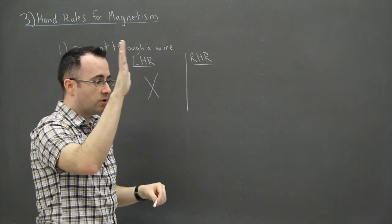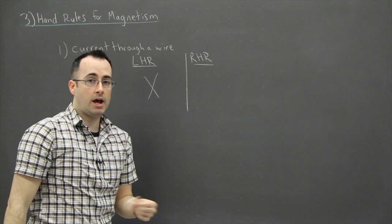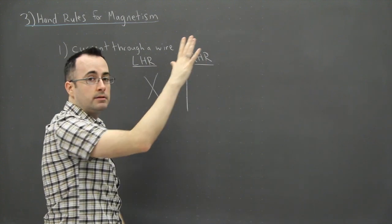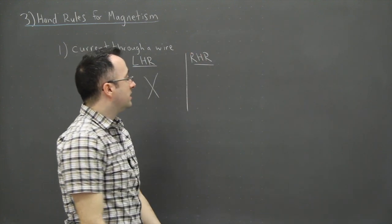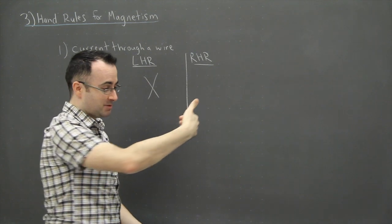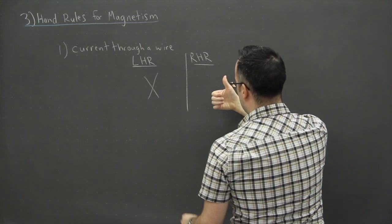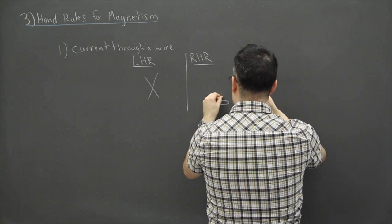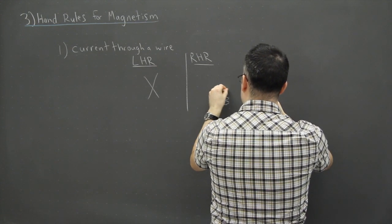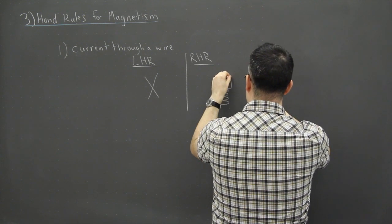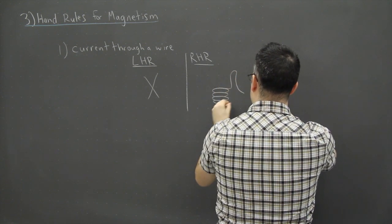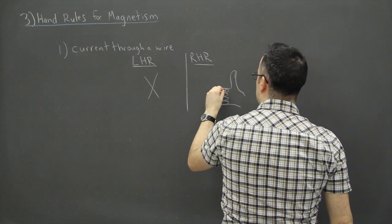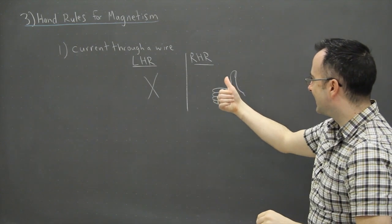This right hand rule only works if you have current running through a wire, and in the IB we use conventional current — that just means we're going to use our right hand. I'm going to attempt to draw a hand with four fingers along with a thumb going up.